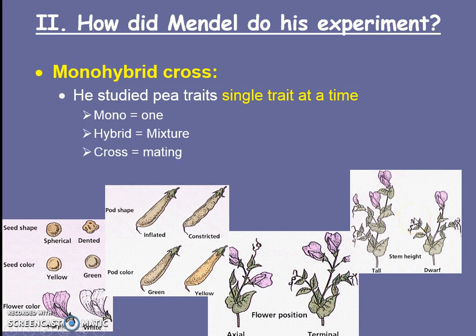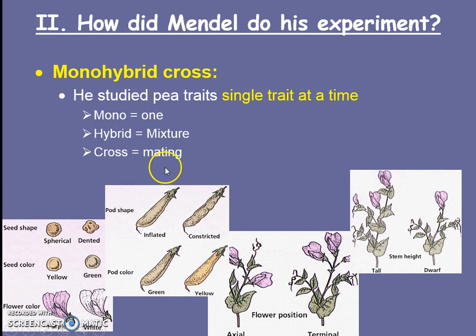The word cross means mating, so his experiments were all about mating. He would take two tall plants and see if they'd make tall plants. He'd take a tall and a short plant and see what their offspring would look like — looking at one trait at a time, mixing the plants up and mating them.